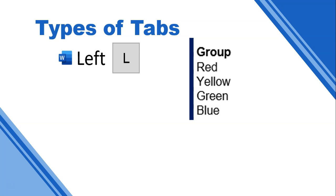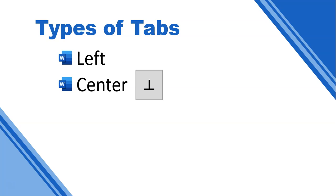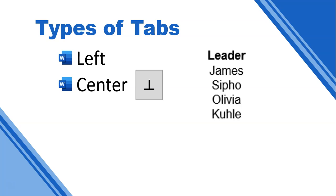The other type of tab you can get is a center tab. It's the same concept — it looks something like an upside-down T. If you see that symbol on the ruler, you'll know that is a center tab. If you've got text with a center tab, it's not aligned on the left or the right — it's almost like it's centered, all in the middle.